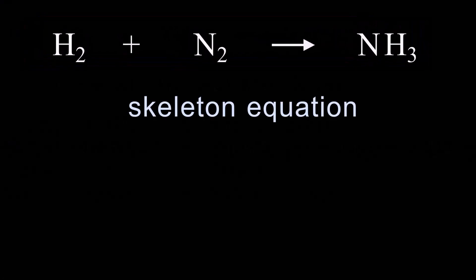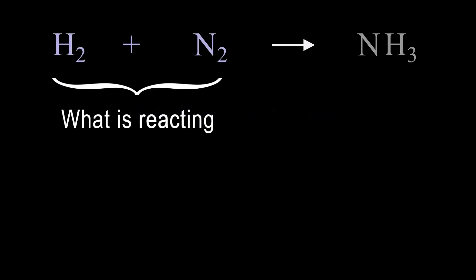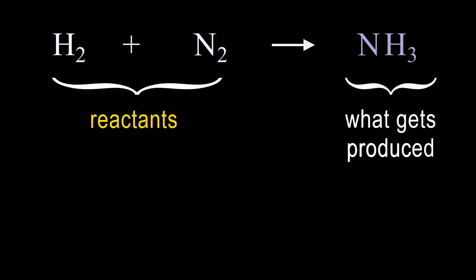This is what is called a skeletal equation, meaning there is no more information other than what is reacting, everything to the left of the arrow, and those are called reactants. The skeletal equation also shows what the reaction produces to the right of the arrow, which are called products.